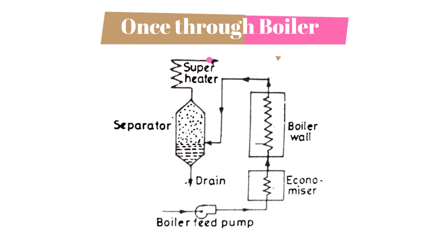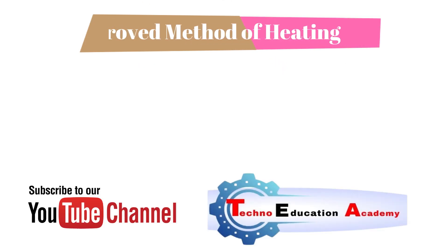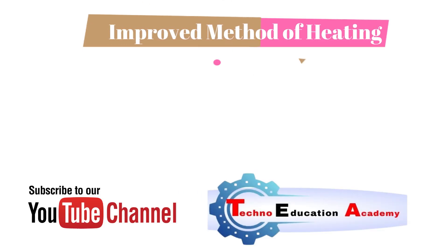In the schematic diagram shown, a steam separator is used to separate the steam, and this steam further passes through the superheater where it is converted into superheated steam.